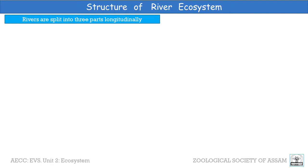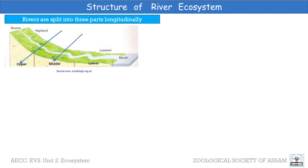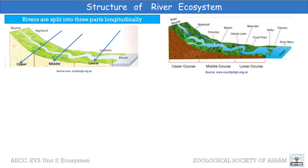Now let us come to the structural river ecosystem. Rivers split into three parts longitudinally: upper course, middle course, and lower course. As shown in the second figure, the upper course is closer to the source — the land is high and mountainous and the river has a steep gradient with fast-flowing water. In the middle course, the river starts to slow down, and one may find here certain flat plains, meanders, oxbow lakes, etc. Certain tributaries may also join at this point.